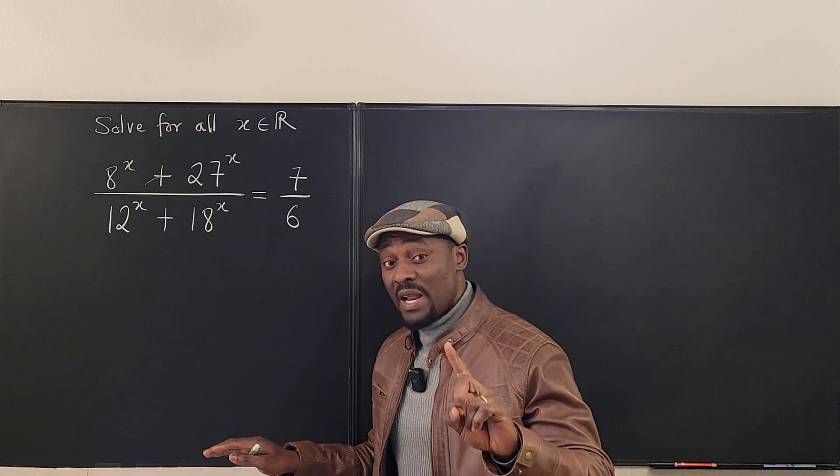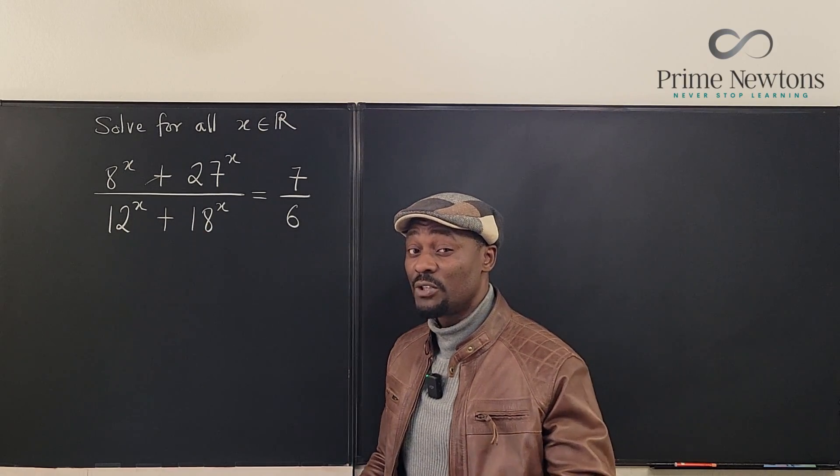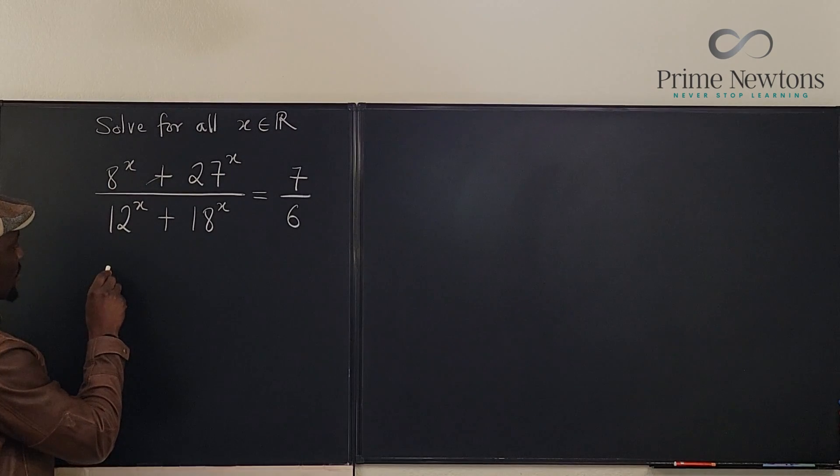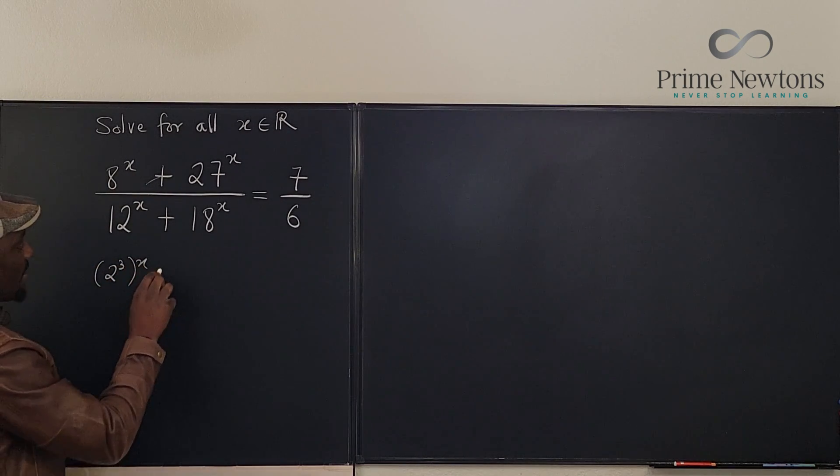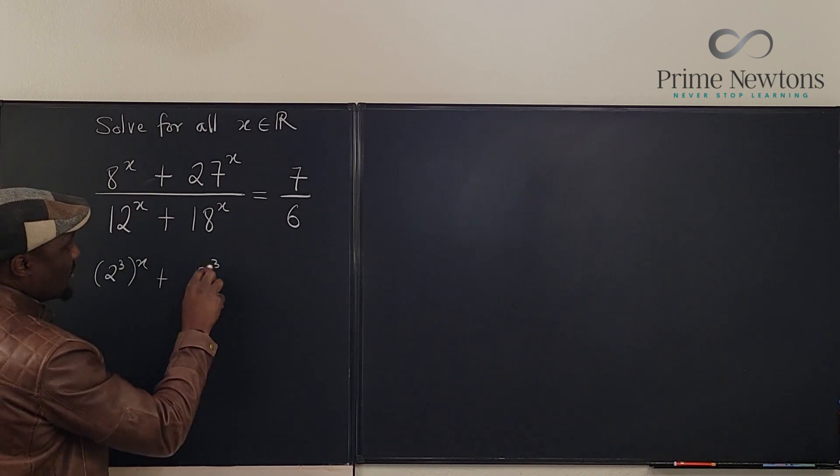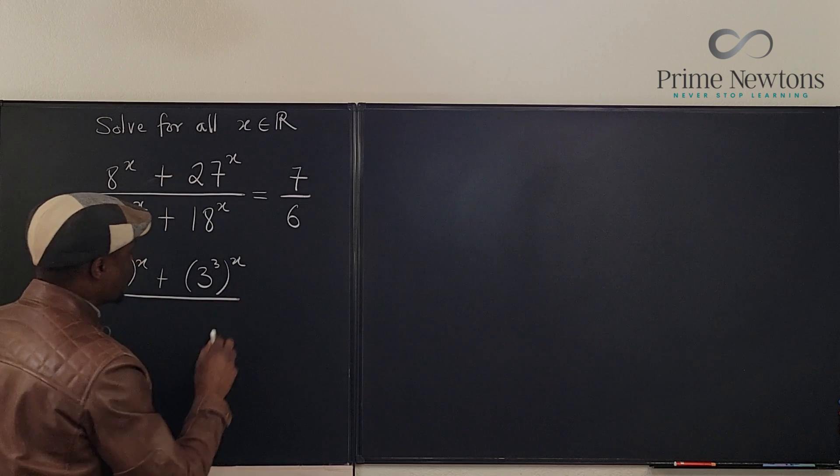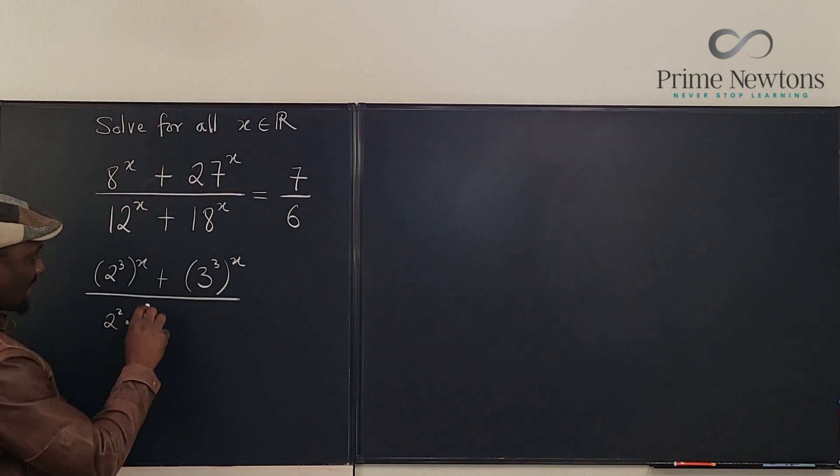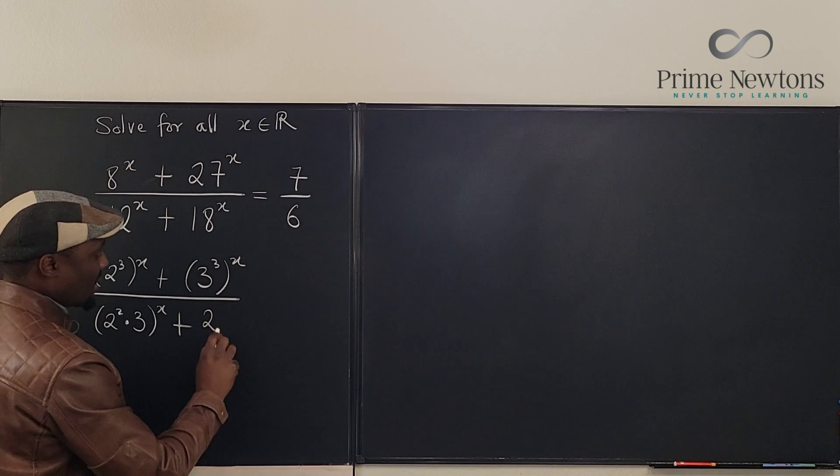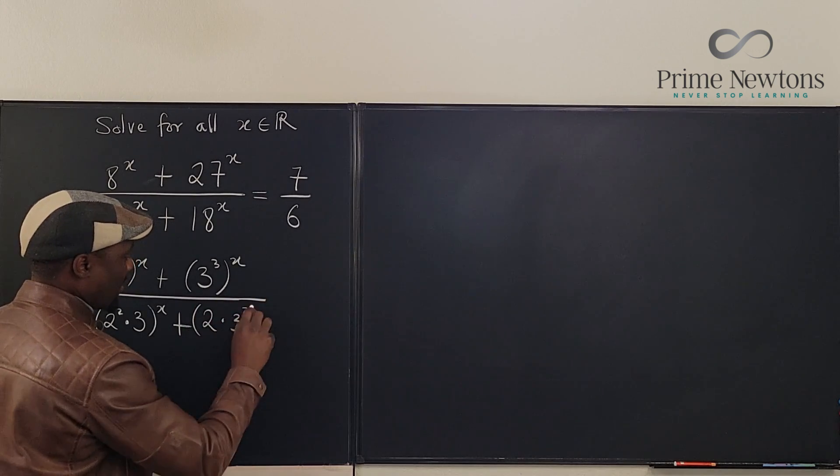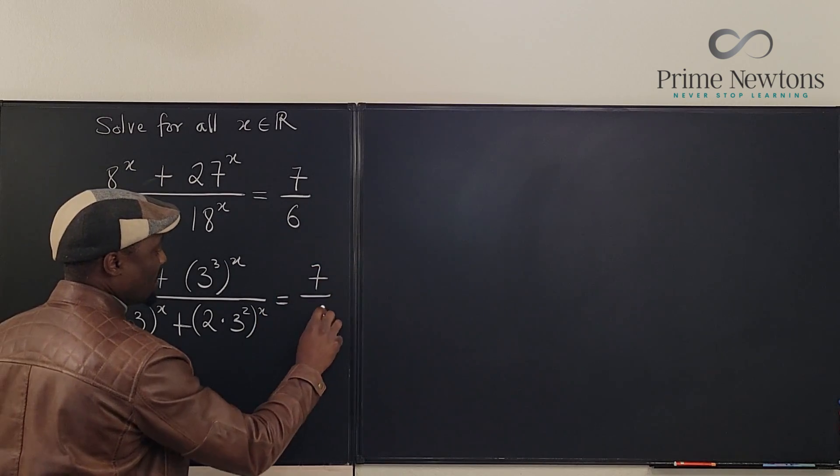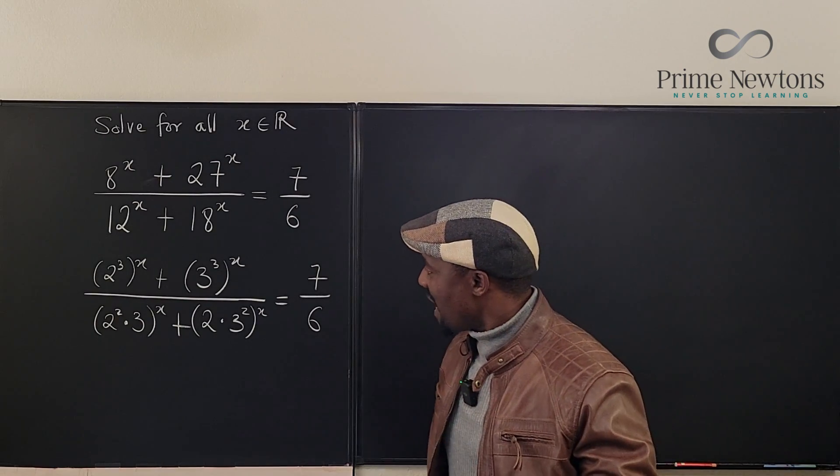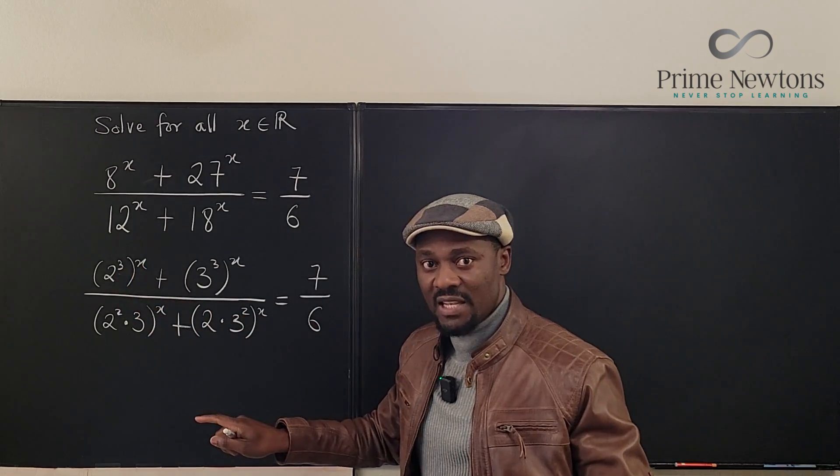Because of the observation I already made, I am going to rewrite every number in terms of 2 and 3 and see what I can get out of it. So I'm going to say that what I have on top is going to be 2 cubed raised to power x plus 3 cubed raised to power x divided by 2 squared times 3 raised to power x, and the answer is 7 over 6. That was my first move and it's a good move because now I can pull this x inside and take the 3 outside.